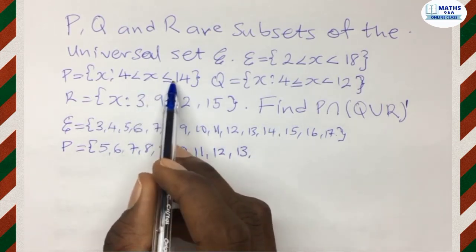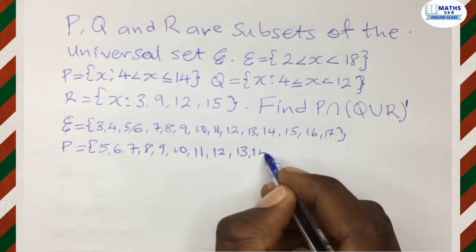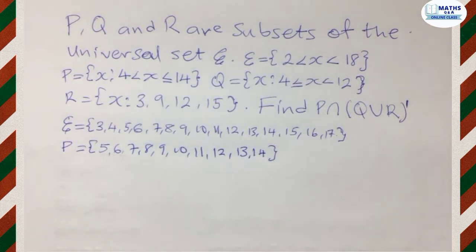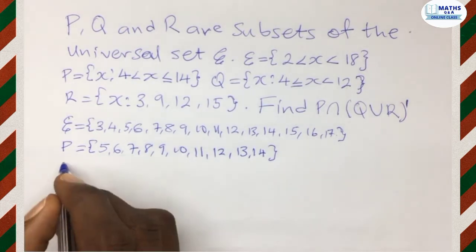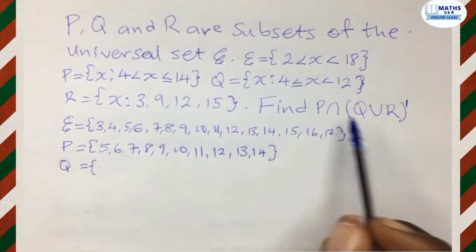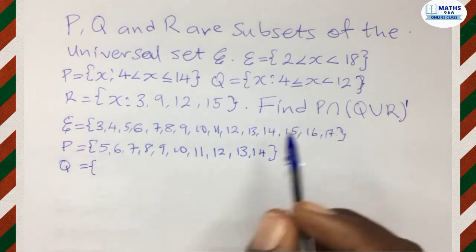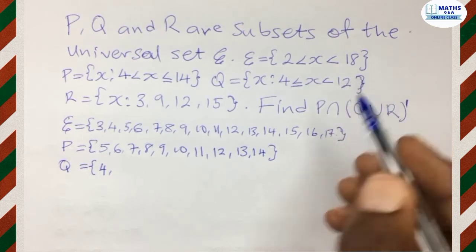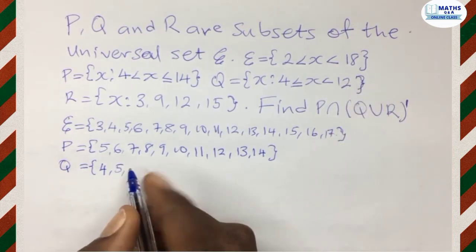13. And then we see that x is less than or equal to 14. So the last element in there is 14. Then we move to Q. x is greater than or equal to 4,